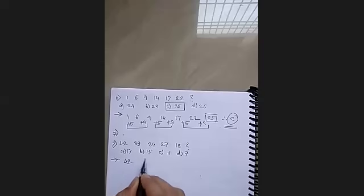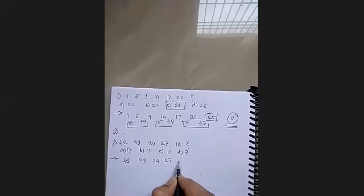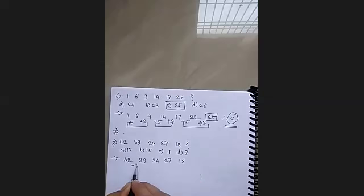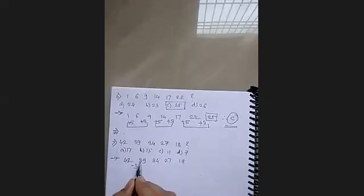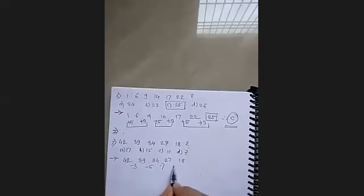There are a few who are writing option B, that is 15. I don't know what logic they are applying. So let's write. I think someone had also written the logic. So let's go through 42, 39, 34, 27, 18. So how much is 42 to 39, minus 3. Then 39 to 34, minus 5. 34 to 27, minus 7. Then 27 to 18, minus 9.